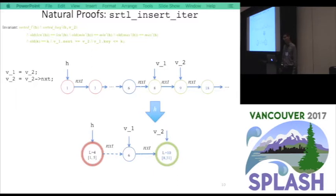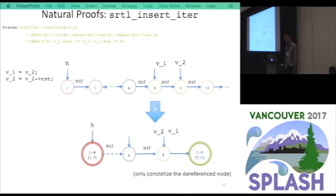With this abstraction, we can still simulate the execution. Update V1. And the next statement will dereference V2. So to do this, we need to concretize the symbolic node because we want to dereference. And after the concretization, we can go ahead and simulate the second statement. So that's the idea of natural proofs. Because we have a finite number of nodes representing all possible heaps. This is a simple proof that people will write manually. And this is what we want to capture.